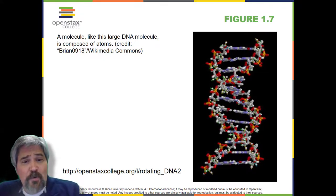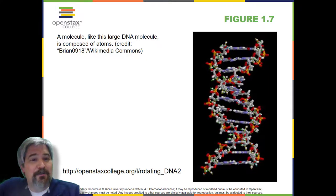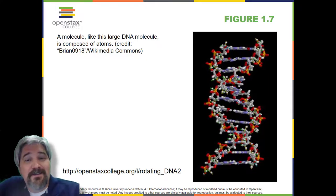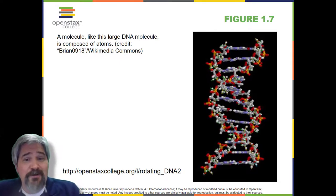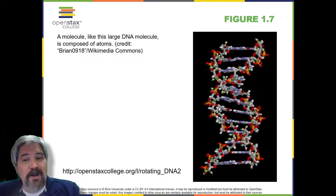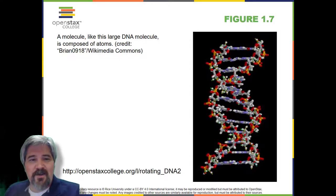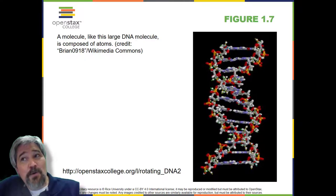In most multicellular organisms, cells combine to make tissues, which are groups of similar cells carrying out the same function. Organs are collections of tissues grouped together based on common function — organs are present not only in animals but also in plants. An organ system is a higher level of organization consisting of functionally related organs. For example, vertebrate animals have the circulatory system that transports blood throughout the body and to and from the lungs, including organs such as the heart and blood vessels. Organisms are individual living entities; single-cell prokaryotes and eukaryotes are also considered organisms and are typically referred to as microorganisms.